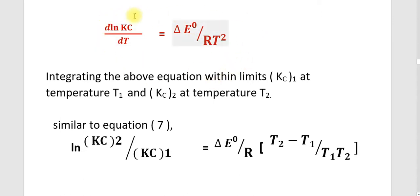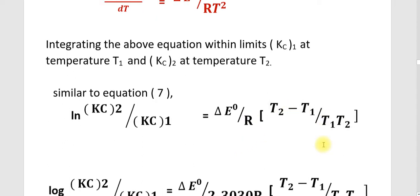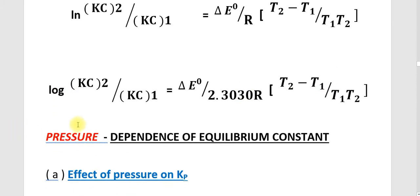This is the final equation. Integrating the above equation within limits — at T1 the corresponding constant is Kc1, and at T2 the corresponding equilibrium constant is Kc2 — similar to equation 7, we can write: Ln(Kc2/Kc1) equals delta E° by R times (T2 minus T1) divided by T1·T2. In log form: log(Kc2/Kc1) equals delta E° divided by 2.303R times (T2 minus T1) divided by T1·T2.